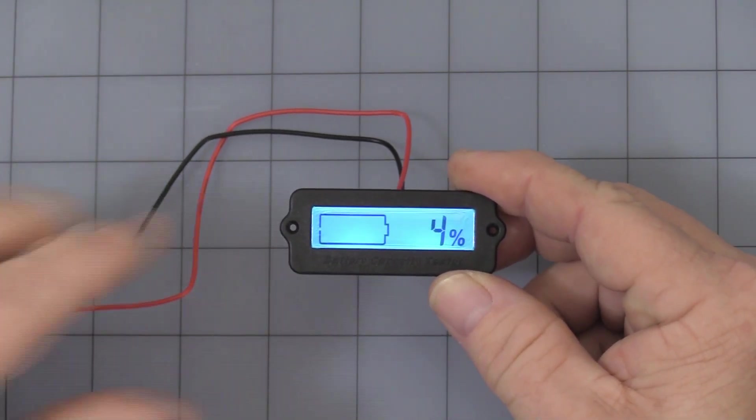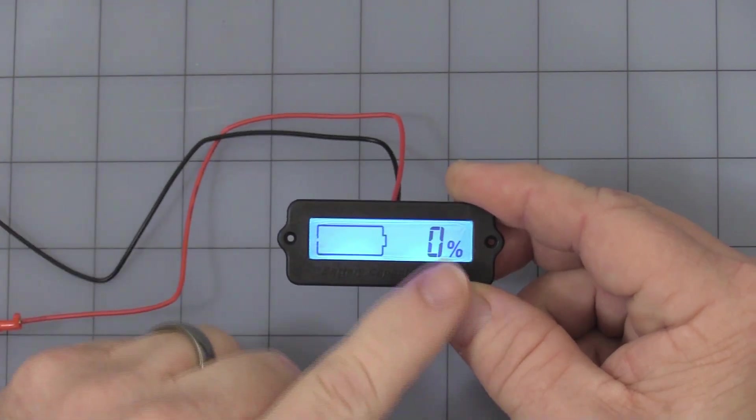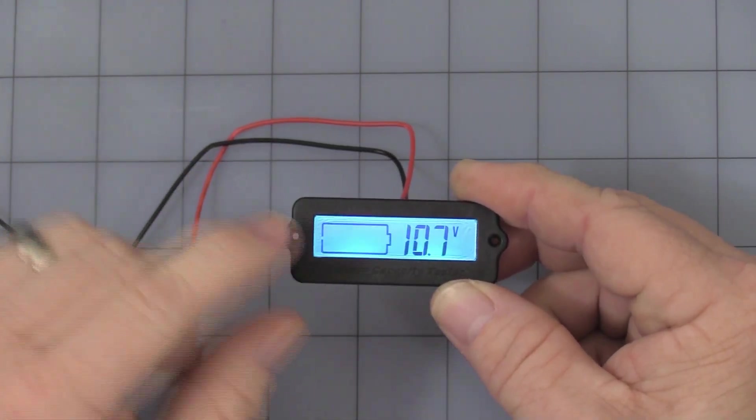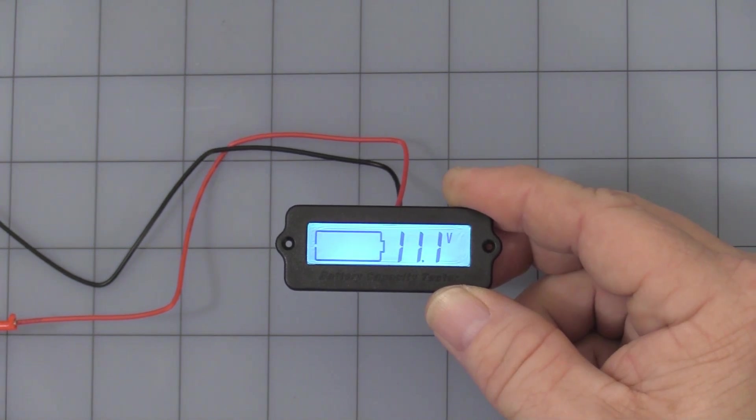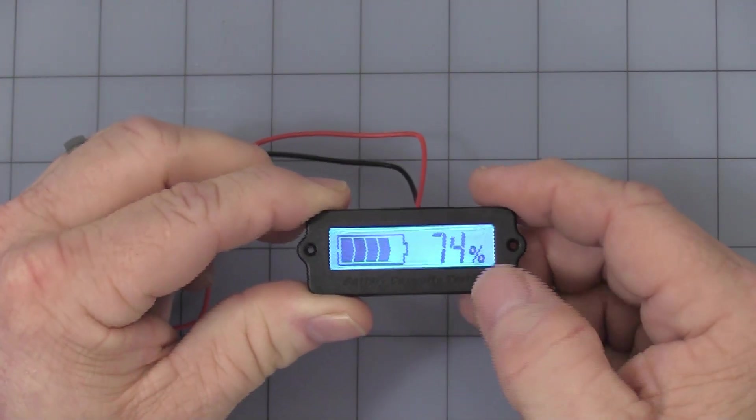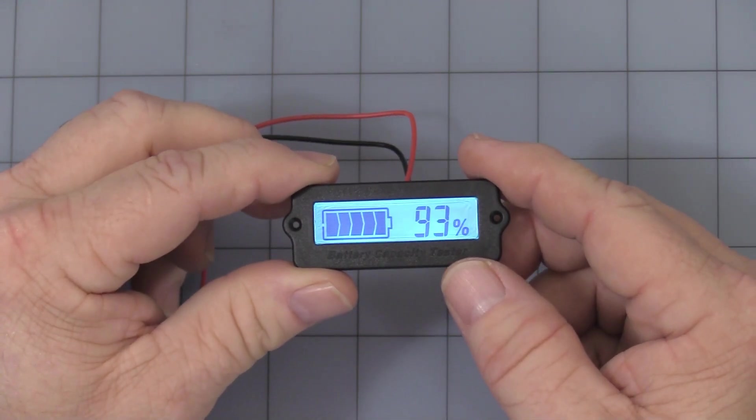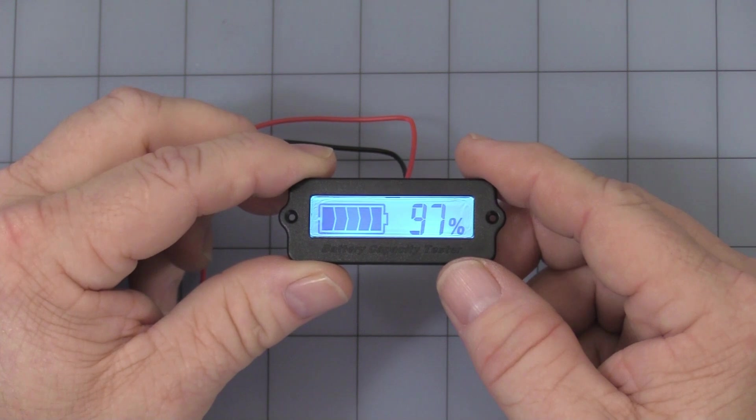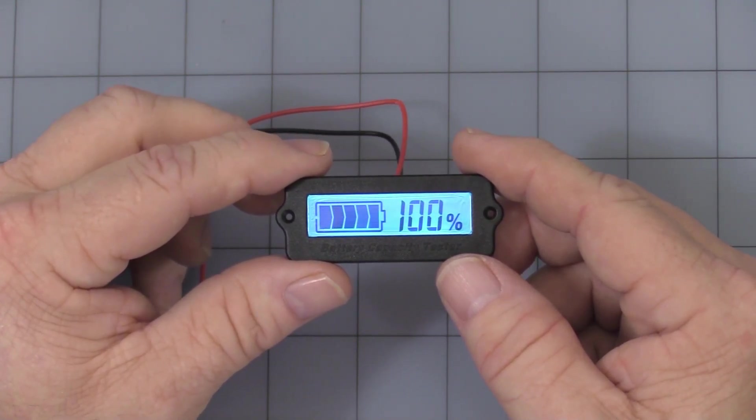And if it gets below 11 volts, let's go ahead and switch it over. It will actually start flashing zero percent and let you know your battery is totally exhausted. Let's go ahead and turn that back up to 13 volts. I'm pressing the button on the back and you can see how it slowly counts that back up to 100%.